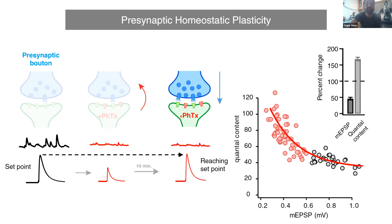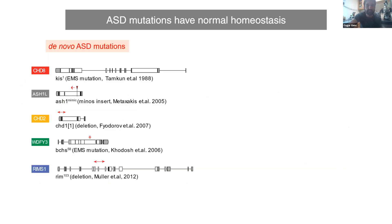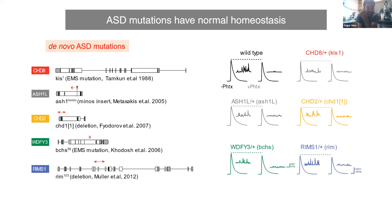Using this assay we wanted to test first if individual autism mutations as heterozygous de novo mutations impair this process. To our surprise, we haven't found any evidence of impairment in homeostatic plasticity. These five major autism gene mutations that were identified in human population had no impairment in achieving homeostatic plasticity. As you can see in all examples, they are all wild type. They are basically restoring back to baseline levels.